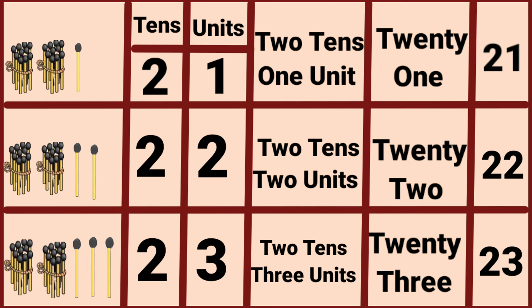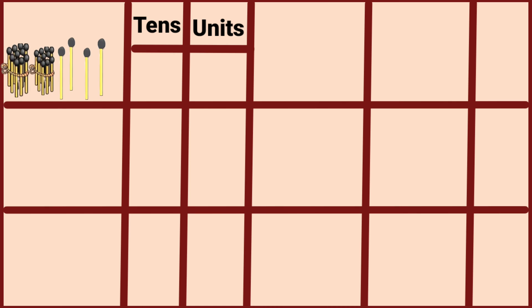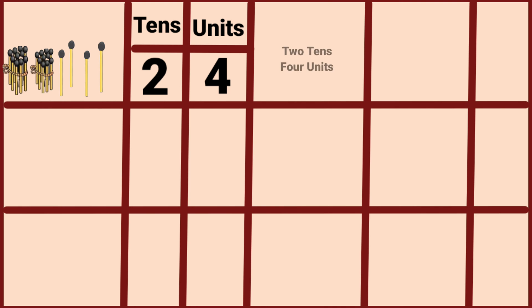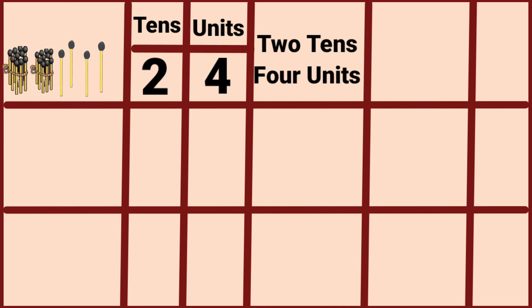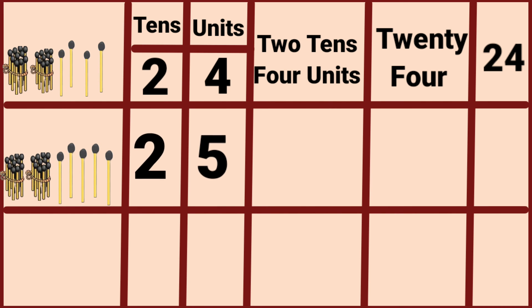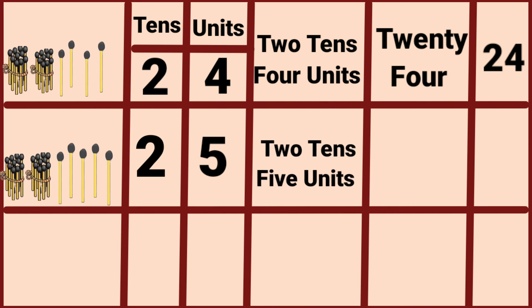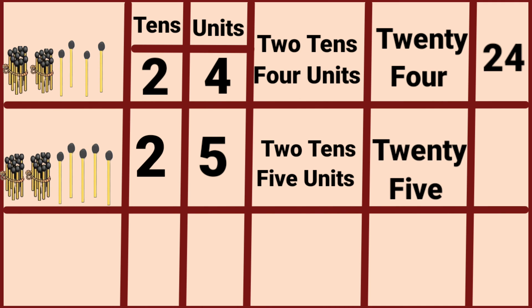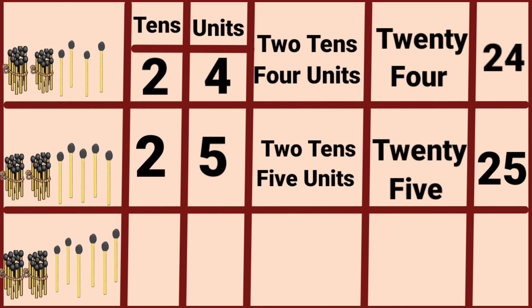Two tens, four units — twenty-four. Two tens, five units — twenty-five.